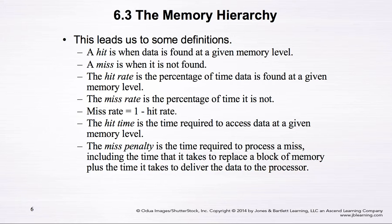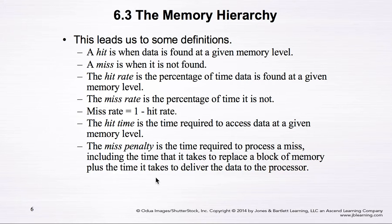A hit is when data is found at a given memory level. A miss is when it is not found. The hit rate is the percentage of time data is found at a given memory level, and the miss rate is the percentage of time it is not found — so miss rate equals 1 minus the hit rate. The hit time is the time required to access data, and the miss penalty is the time required to process a miss, including the time to replace a block of memory plus the time to deliver data to the processor.